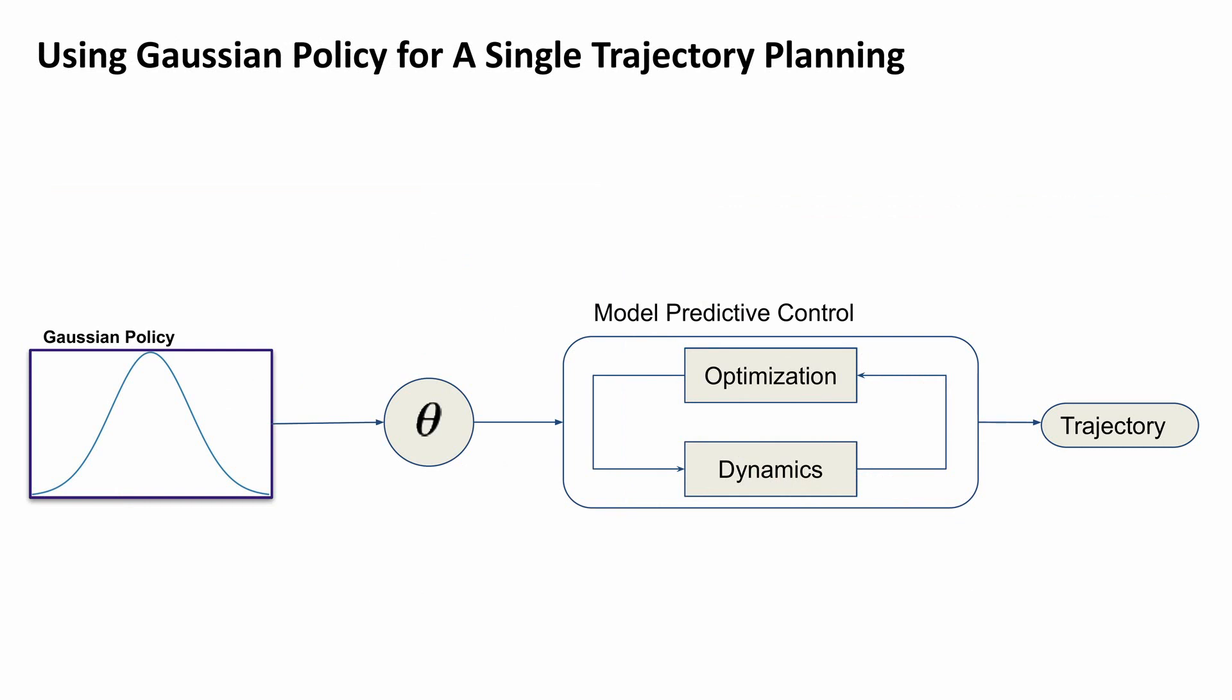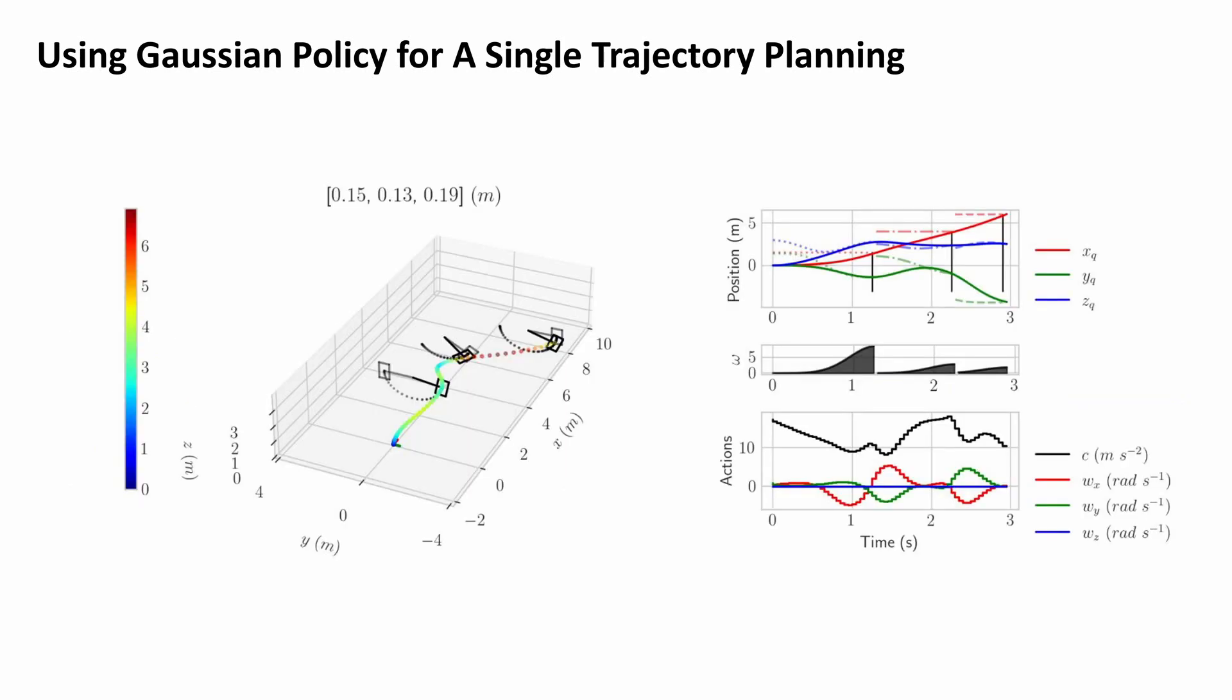We first focus on solving a simple problem of learning a Gaussian policy for a single trajectory planning. The mean of the policy is a vector of unknown variables. We model the time for passing through each gate as a Gaussian policy. After optimizing the Gaussian policy using a policy search algorithm, we successfully plan a trajectory that passes through all moving gates.